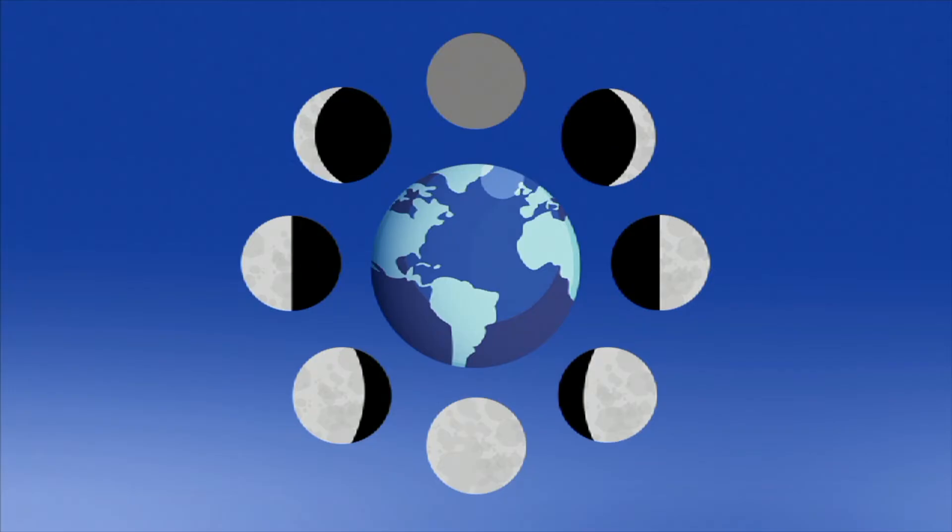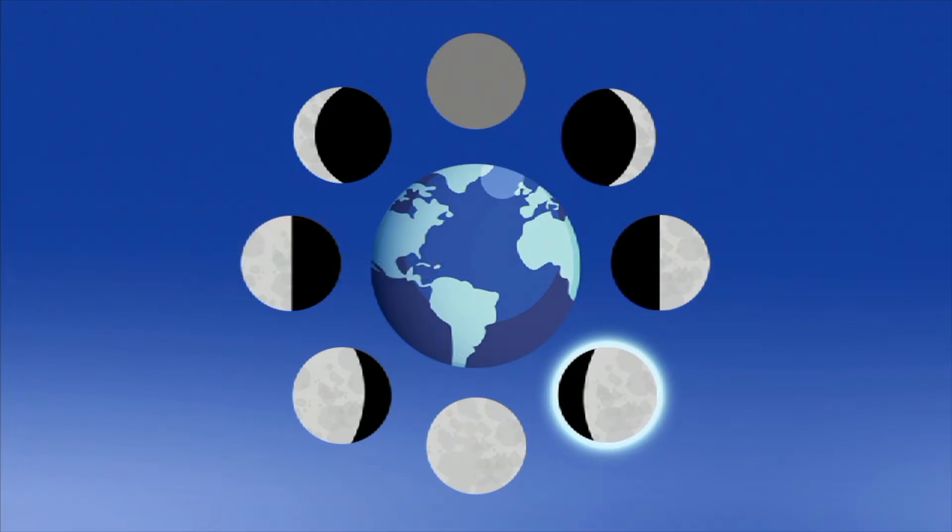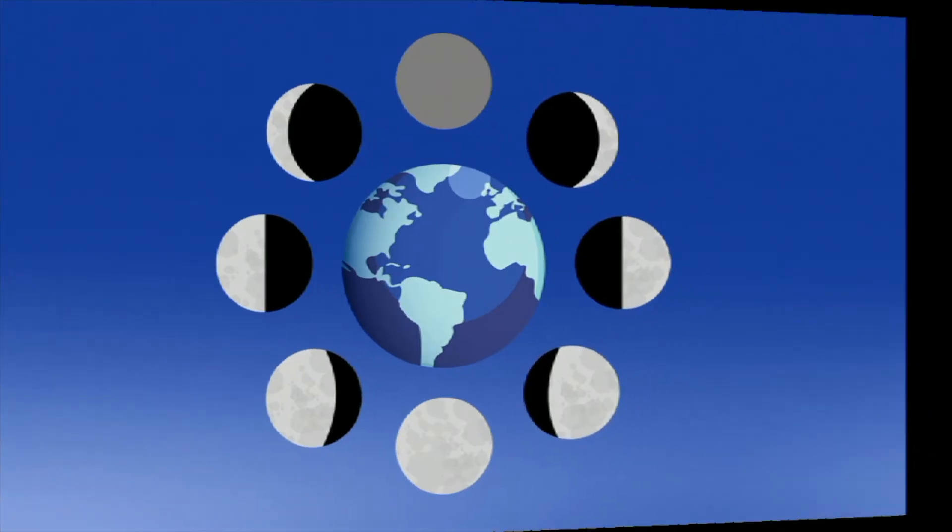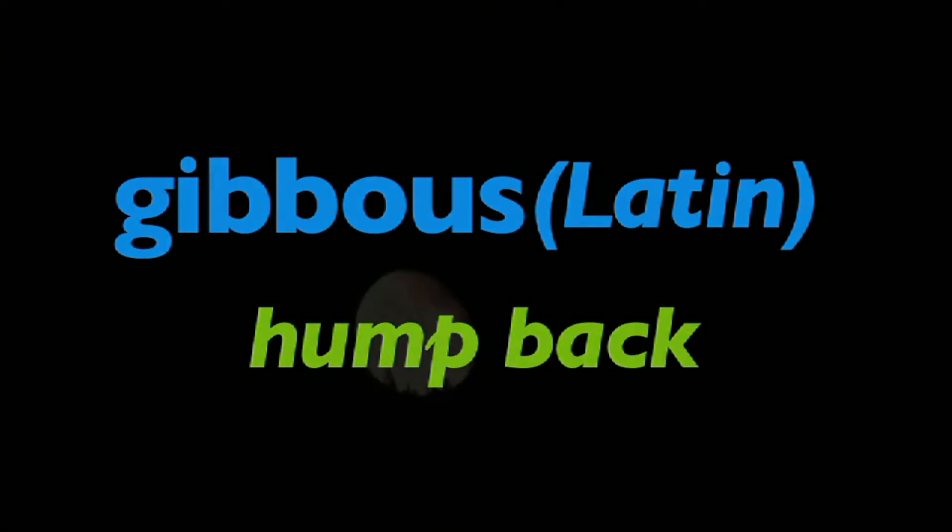The next phase is called waxing gibbous. A gibbous Moon is a very bright Moon. Waxing indicates that it is still growing larger on its way to a full Moon. Gibbous comes from a root word meaning humpback. The Moon is almost full and looks like it has a humpback.